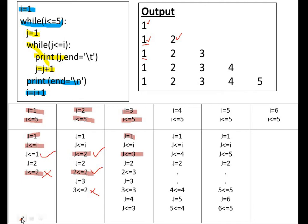j equal to one, j less than or equal to i means one less than or equal to three — condition is true, so one is printed. j increments to two, two less than or equal to three is true so two is printed. Then three less than or equal to three is true so three is printed. This continues: i becomes four, then five. When i equals five, the last inner loop completes, then i becomes six, and i less than or equal to five is false, so execution stops.